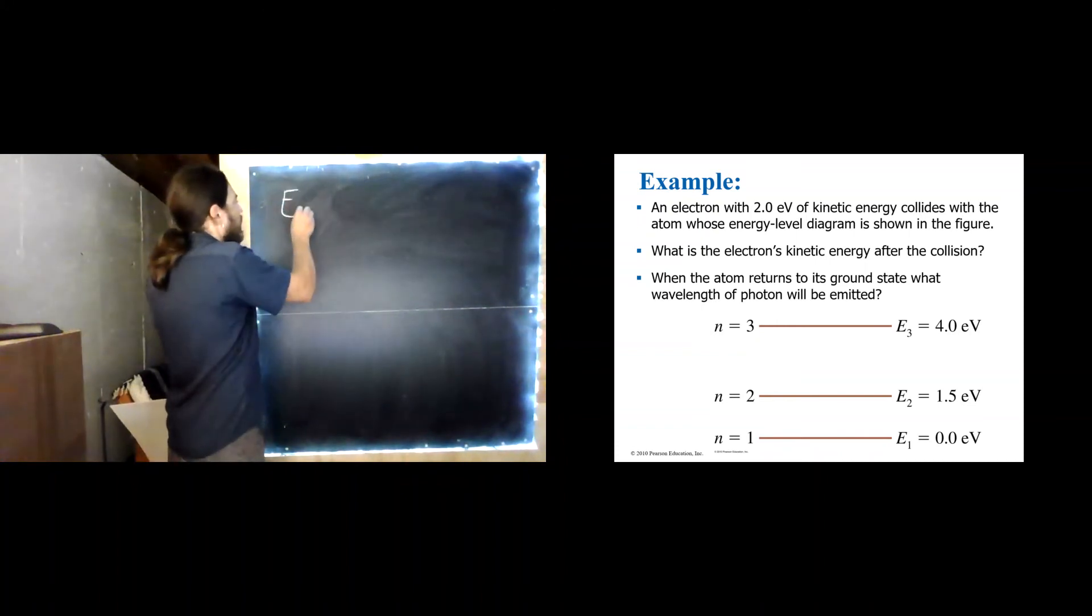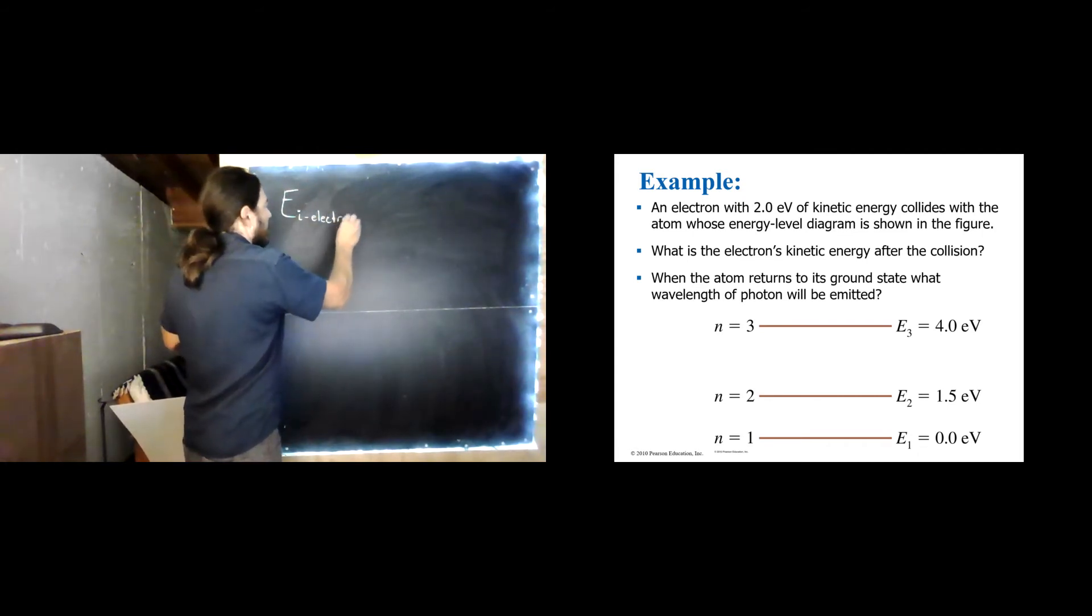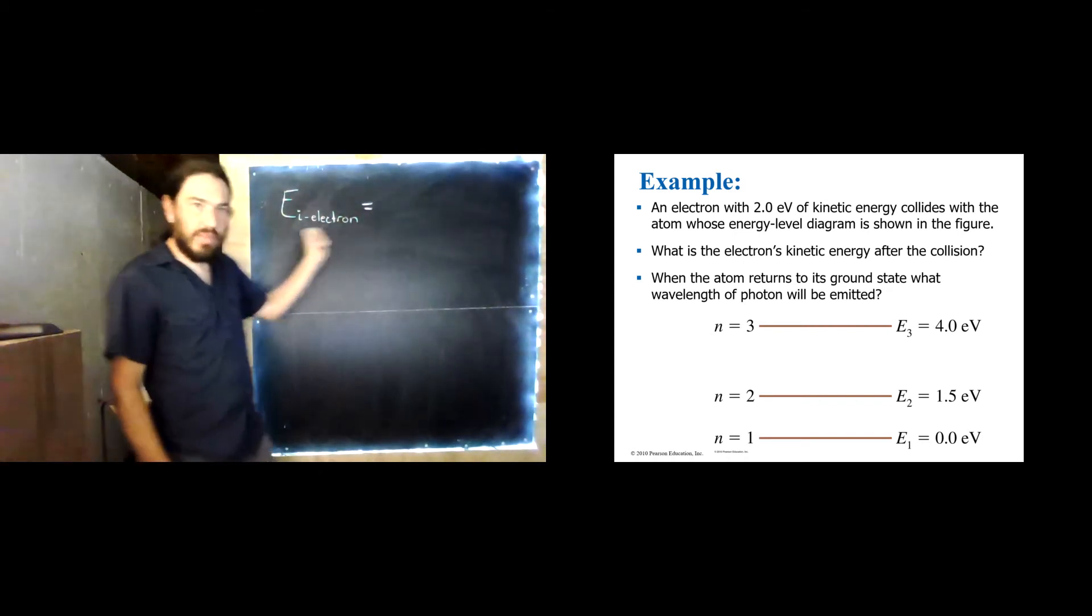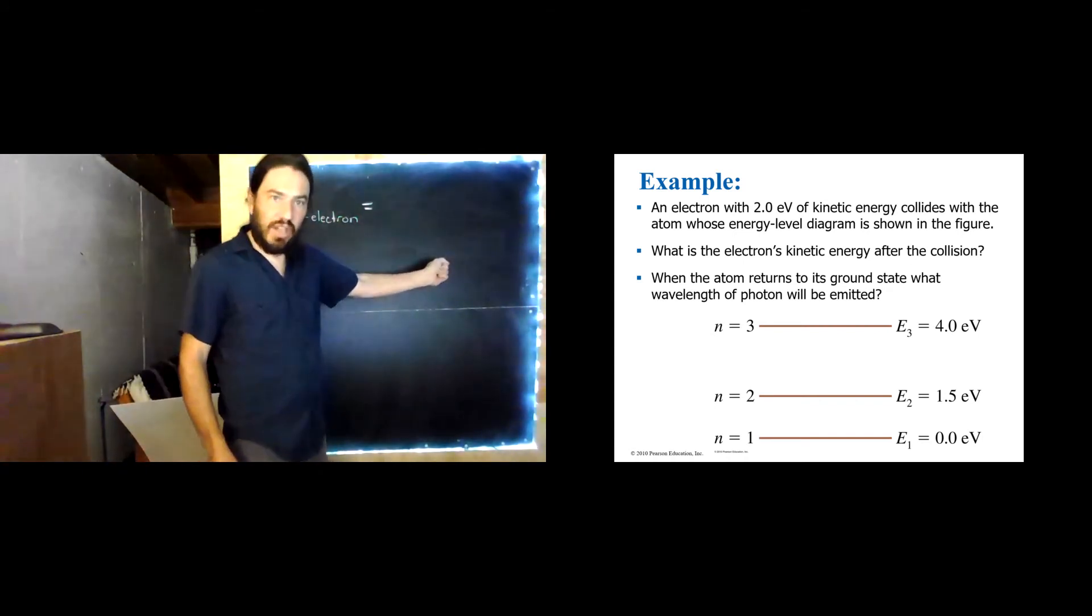So we'll say that the energy initially of the electron, well, where did that go? Conservation of energy says the total initial energy must equal the total energy, finally.